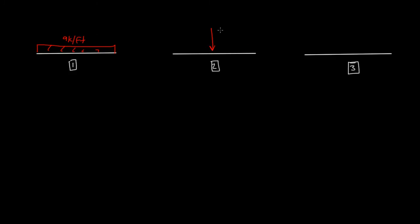This is element 1, this is element 2, this is element 3. Element 1 has a uniformly distributed load of 9 kip per foot. Element 2 has a point load right in the middle of 20 kips. And then element 3 has a uniformly distributed load as well.